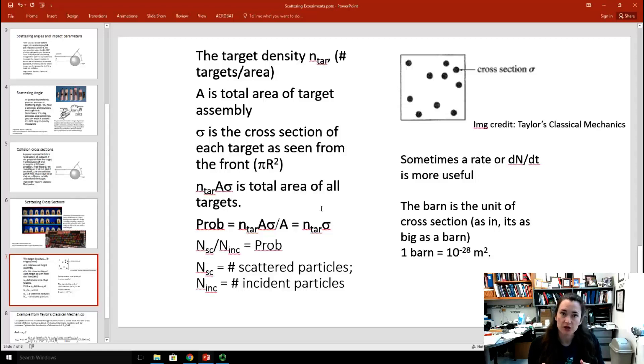You could also measure the probability by performing the experiment. If you do that, then the probability of scattering is going to be equal to the total number of particles that are scattered divided by the total number of particles that you shot at your target. I'm going to define this as N scattered divided by N incident or N sub sc divided by N sub inc. So, that's also equal to your probability.